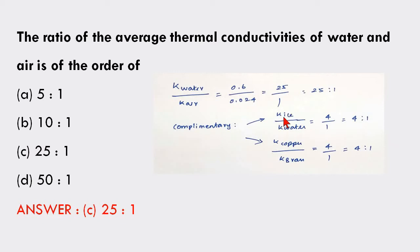Some tips: The ratio of ice to water thermal conductivity is 4:1. Similarly, the ratio of copper to glass is also 4:1.